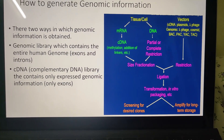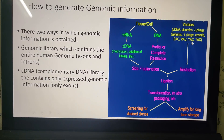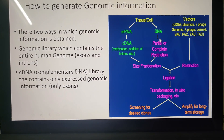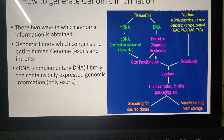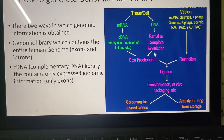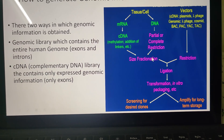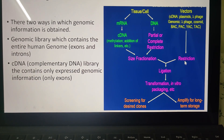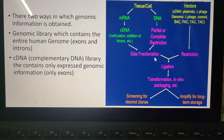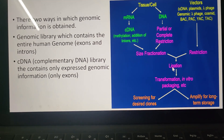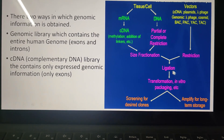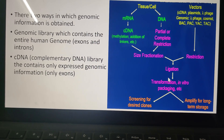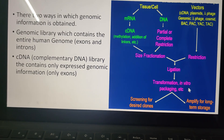You select any one of these vectors and treat those vectors by using the same restriction endonuclease which you have used to cut the DNA. Now your DNA, which is converted into different fragments, each fragment will have a cohesive end, and your vector will also have a cohesive end. So you mix both the vector as well as the DNA fragment so that ligation will take place.